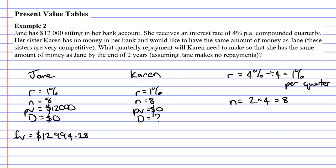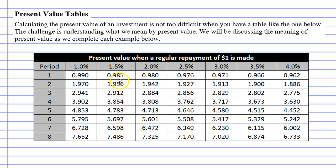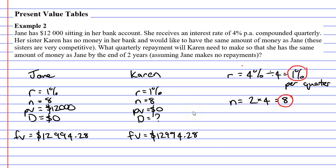Karen wants to have the exact same amount of money, so we want Karen to have the same future value of $12,994.28. We need to figure out what repayment will give Karen this future value. We've calculated the number of time periods as eight, and our interest rate is 1% per quarter. Going back to our present value table at 1% and n=8, when we line these up, we get the number 7.652. This is our magic number.